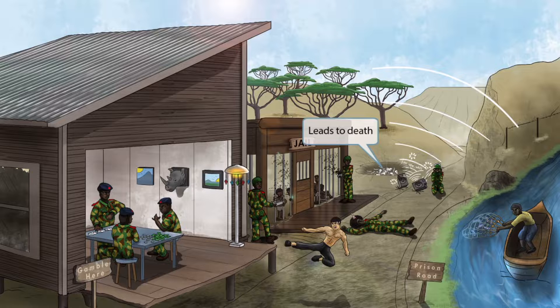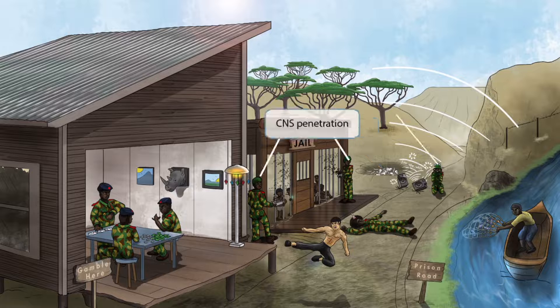Back here, we can see that the guards have dug a shallow grave for any of their victims that pass away — there are some bones in this pit. This represents the fact that the infection often leads to death. As a recap: patients can get fevers, headaches, and enlarged lymph nodes. Ultimately, the CNS may be penetrated so the patient can develop slurred speech, fall into a coma, and ultimately die.